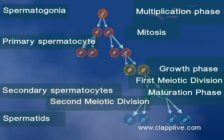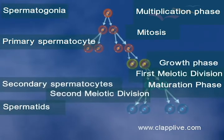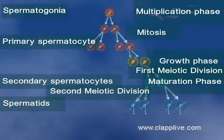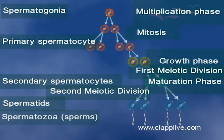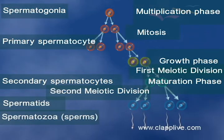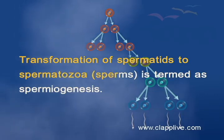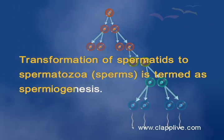The non-motile spermatids remain connected to each other by their cytoplasm. These spermatids are then transformed into motile spermatozoa or sperms. Transformation of spermatids to spermatozoa is termed as spermiogenesis.